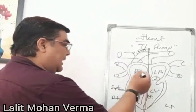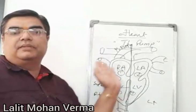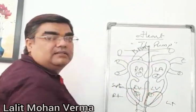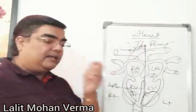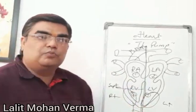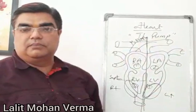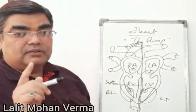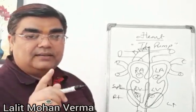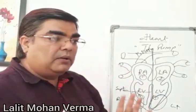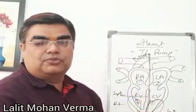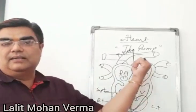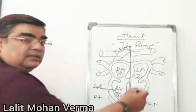The right auricle and right ventricle are separated from the left auricle and left ventricle. The wall of the ventricle is always thicker than that of the atria, because the ventricle has to pump blood with great force to all other parts of the body — therefore they need thicker walls than the atria.